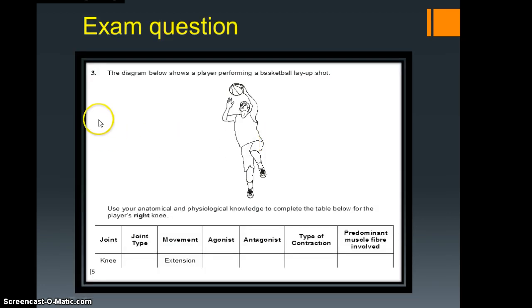Let's move on. Let's have a look at how this is going to manifest in an exam question. This is an actual exam question. Using your anatomical and physiological knowledge to complete the table below for the player's right knee. All you have to do then is identify what the joint is of the player's right knee, not the one that you're looking at, and the joint type. That's where this knowledge we've just been looking at is very important. So one mark, joint type, done.